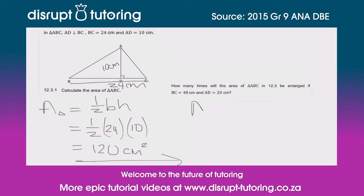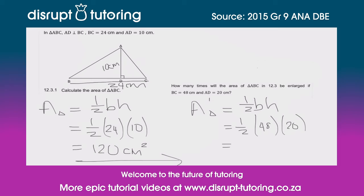The area of the enlarged triangle equals half base times height. Plugging in our new values: base is 48 centimeters and height is 20 centimeters. Half of 48 is 24, and 24 times 20 gives us 480 centimeters squared.